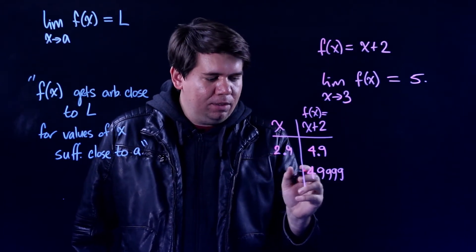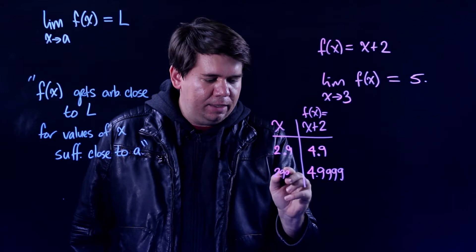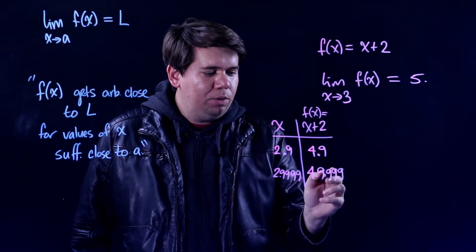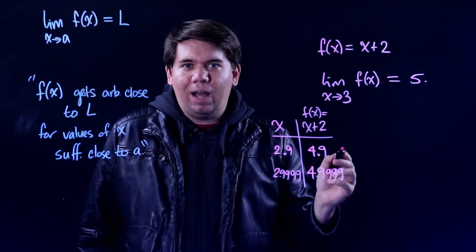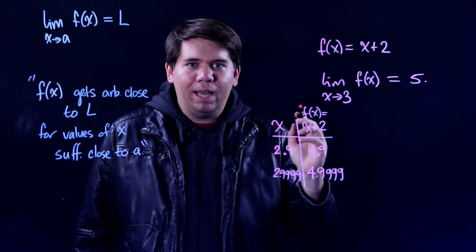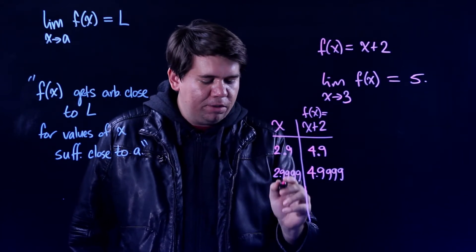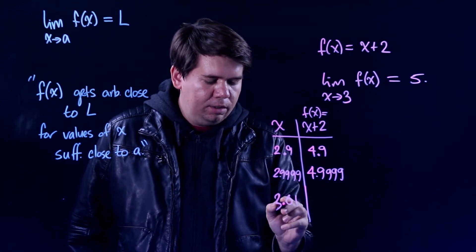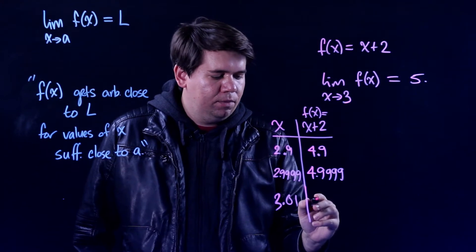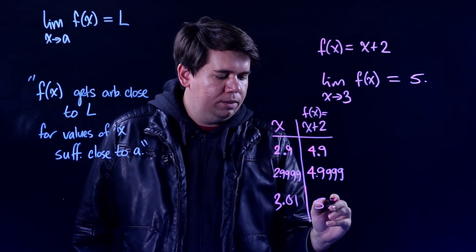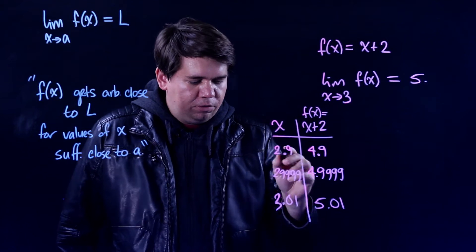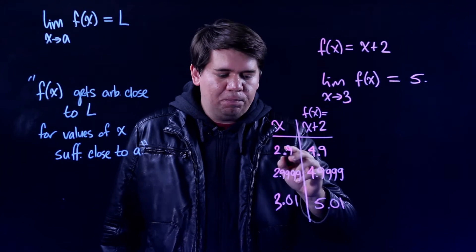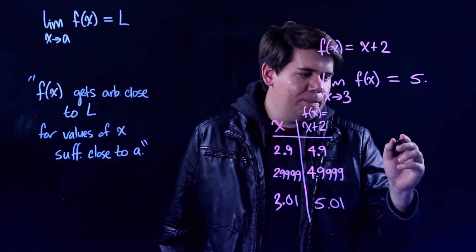Well you just have to begin with something like 2.9999. Notice if you begin with something really close to 3, you get out something really close to 5, and you can get out values as close to 5 as you want. You can do it on the other side too. If you plug in something like 3.01, you would get out something like 5.01. So you can get as close to 5 as you want as long as you pick values really close to 3. You can also think about this graphically.